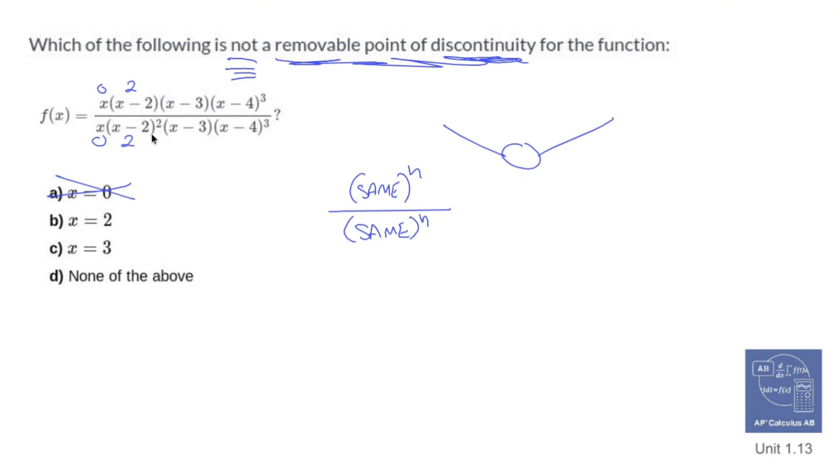So since the denominator's multiplicity is larger than the numerator's multiplicity, two is a vertical asymptote, which means two is not my removable point of discontinuity.